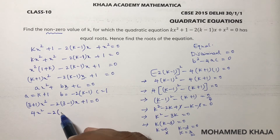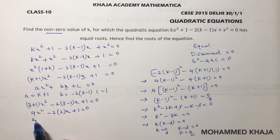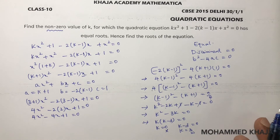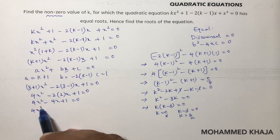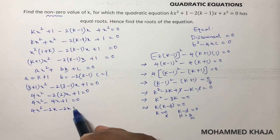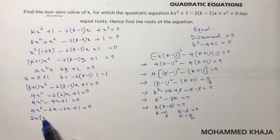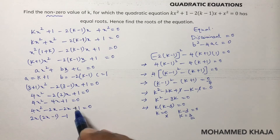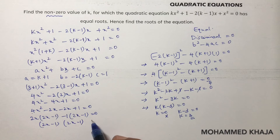Substituting k = 3: 4x² - 2(2)x + 1 = 0, which gives 4x² - 4x + 1 = 0. Factorizing: split -4x as -2x - 2x, giving 4x² - 2x - 2x + 1 = 0. Taking 2x common from first two terms: 2x(2x-1) - 1(2x-1) = 0, so (2x-1)(2x-1) = 0.